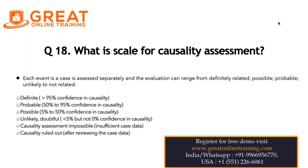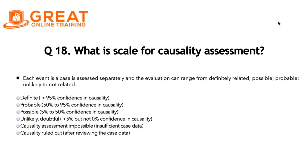The next scale is probable. If we have 50 to 95% confidence in causality, we use the causality term probably related. Then we have possible, where we have 5 to 50% confidence in causality, and we consider the event as possibly related to the medication.